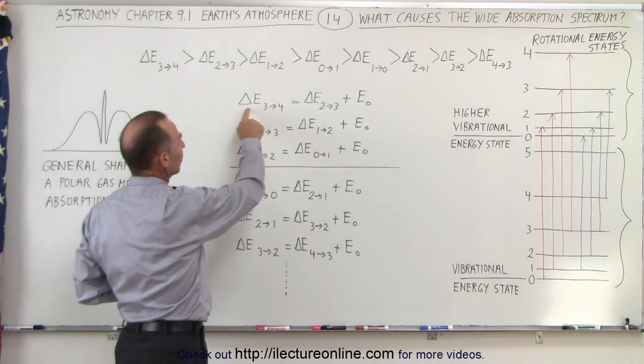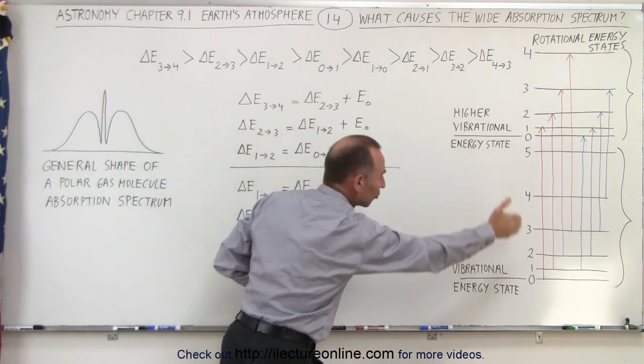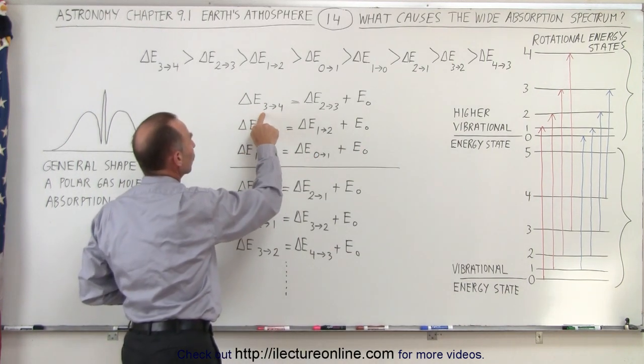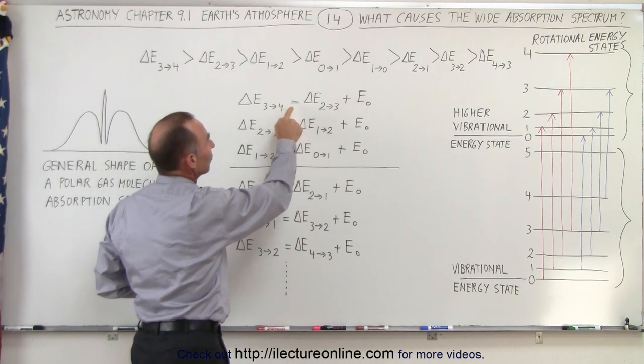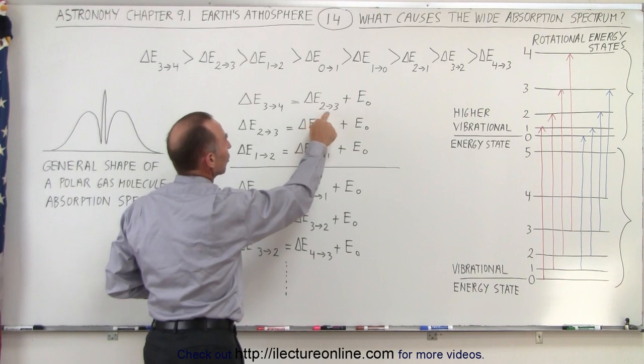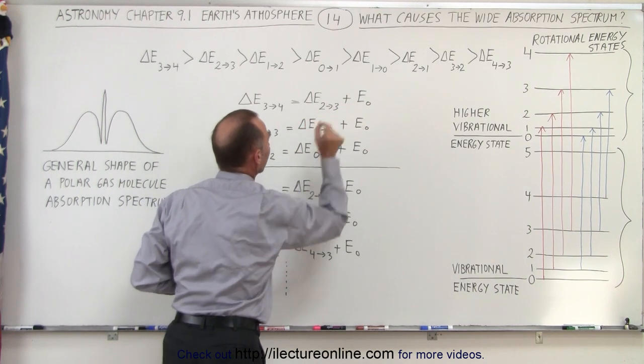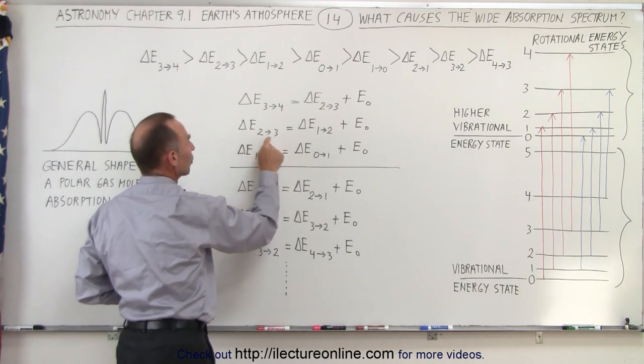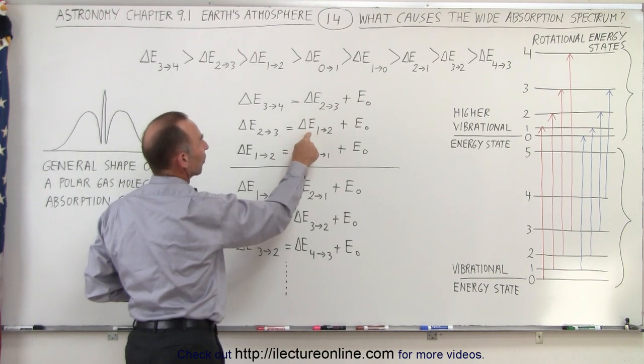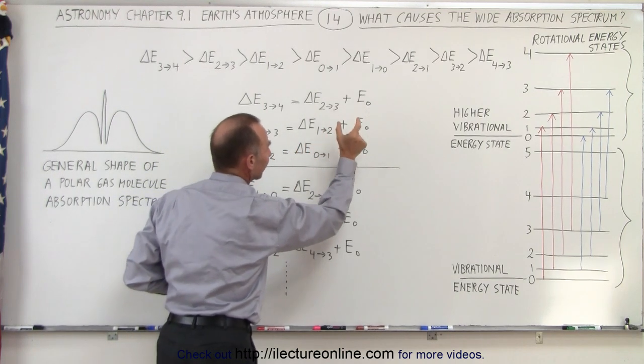In other words, the energy difference in the rotational energy state from the 3rd to the 4th state equals the energy difference from the 2nd to the 3rd state plus some fixed amount. Going from the 2nd to the 3rd state equals the energy difference from the 1st to the 2nd state plus that same fixed amount.